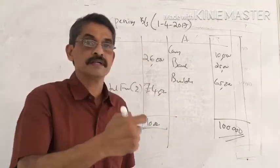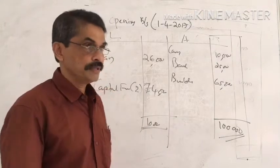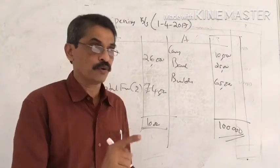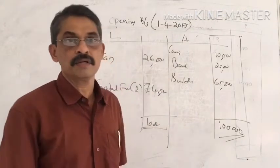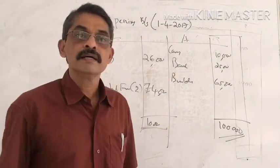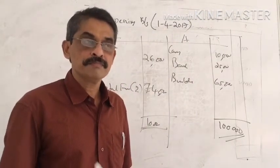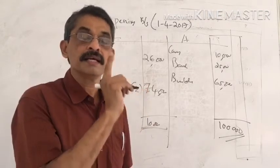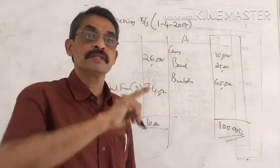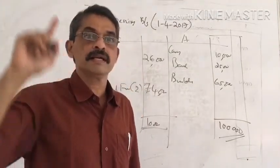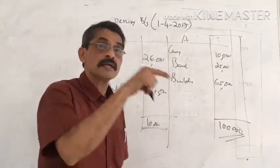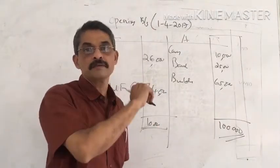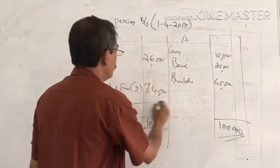The loan is Rs. 50,000 and the interest on loan is Rs. 2,50,000. We work through the capital fund calculation. The balancing figure comes to Rs. 25,000 for the capital fund. These are the figures that count for the opening balance sheet.